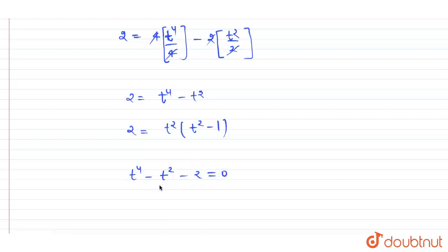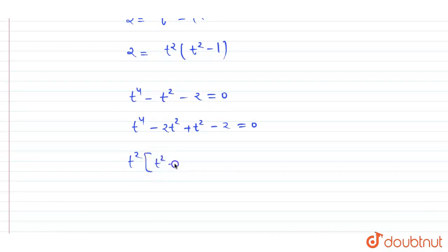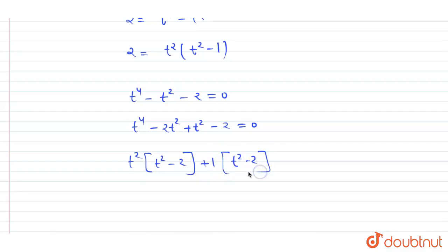We can rewrite the equation as t⁴ minus 2t² plus t² minus 2 equals 0, then take t² as common from the first two terms and 1 as common from the last two terms, giving t²(t² minus 2) plus 1(t² minus 2) equals 0. We have formed a quadratic equation with factors (t² plus 1) and (t² minus 2).